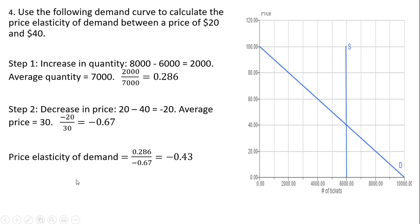In the last step, the price elasticity of demand is minus 0.43. This is an indication of inelastic demand — when the price elasticity of demand is less than 1 in absolute value, ignoring the minus sign, we have inelastic demand. Alright, those are my examples — I hope you found this video helpful.